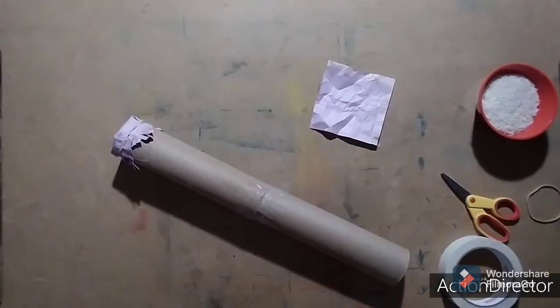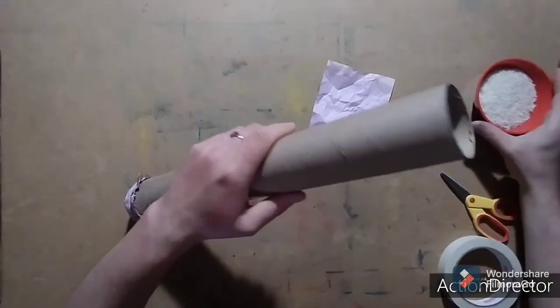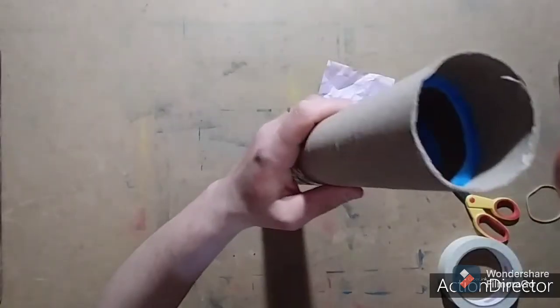Now you're going to attach the other craft paper square to the other end of the tube using the rubber band.